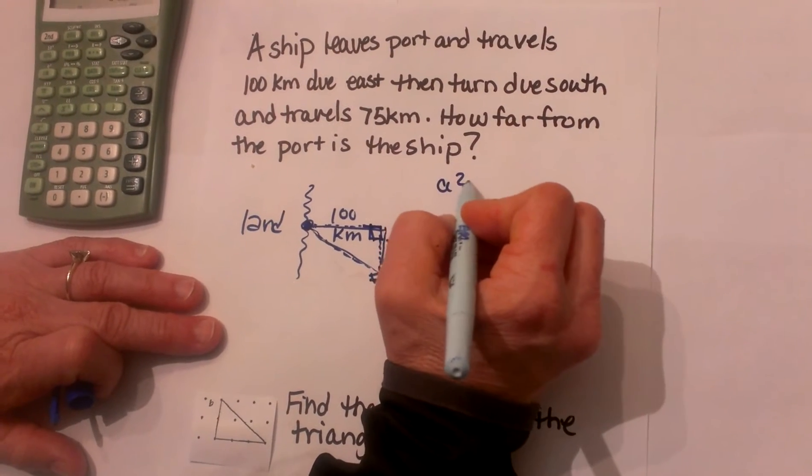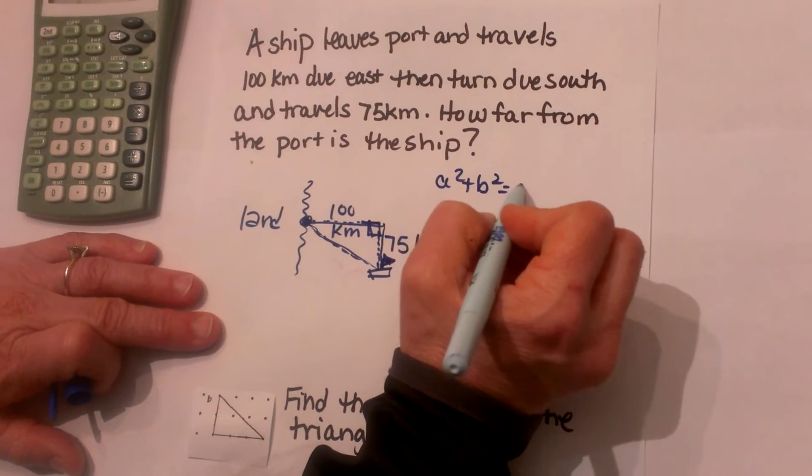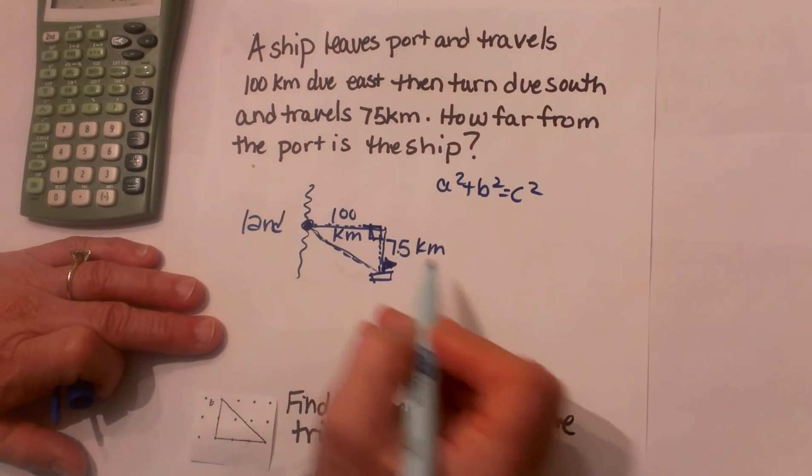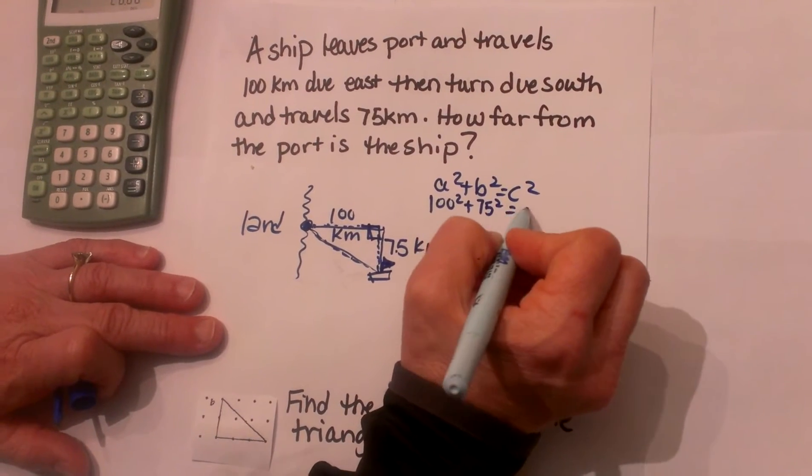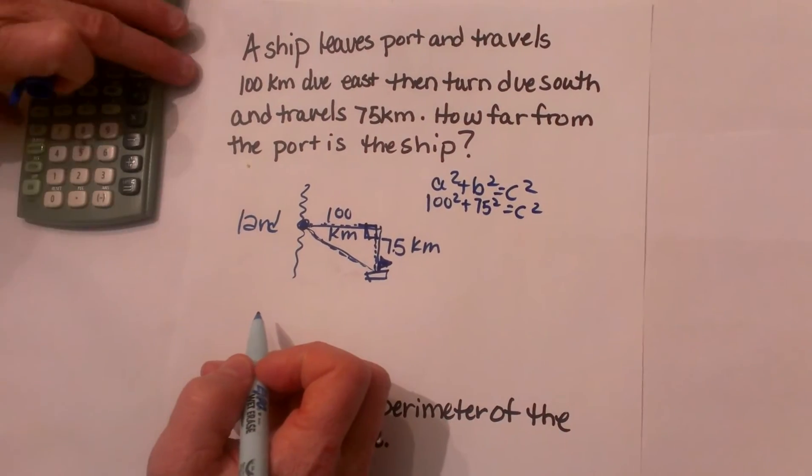So I am going to use a² + b² = c² where a and b are given as 100 and 75, and I am going to solve for my hypotenuse or c.